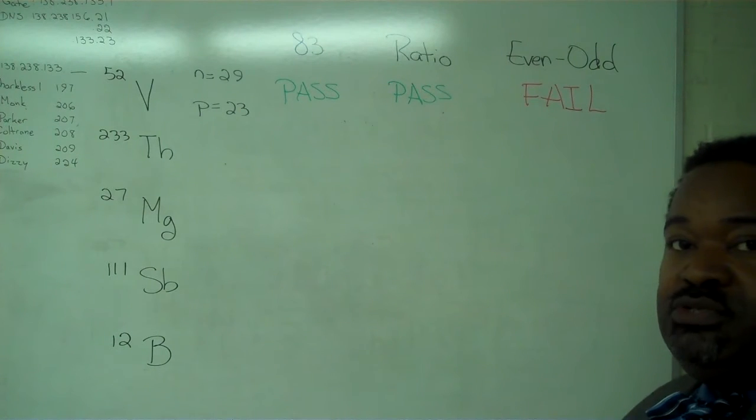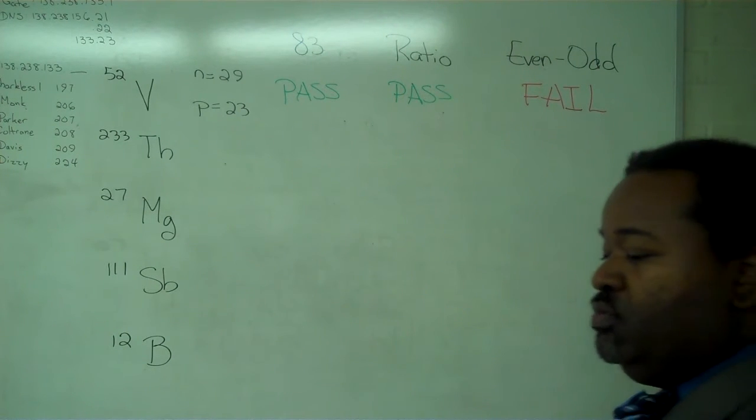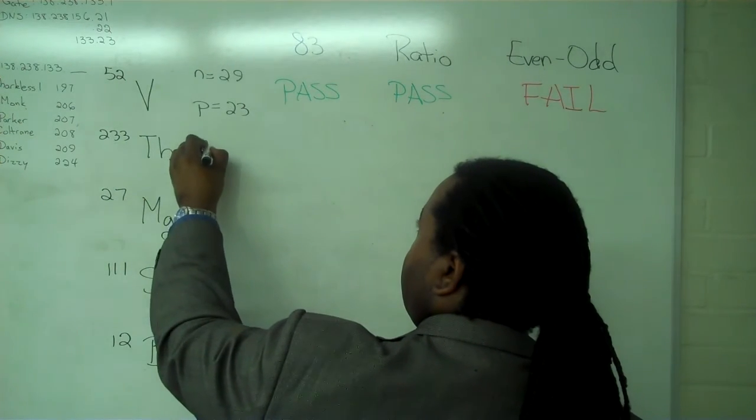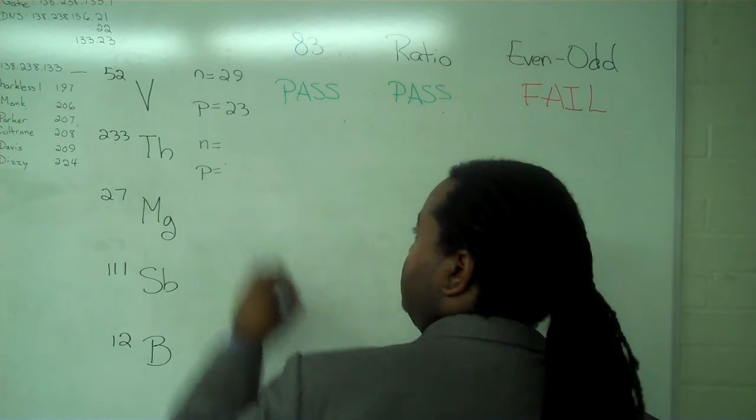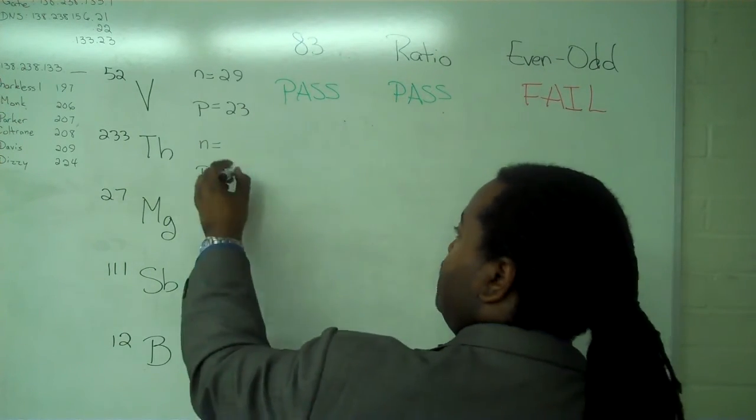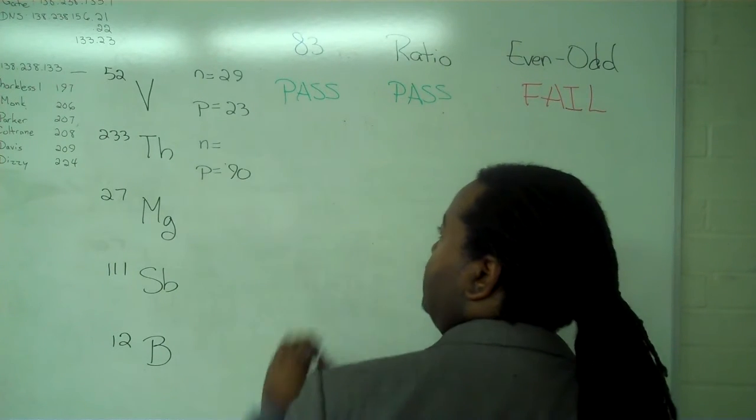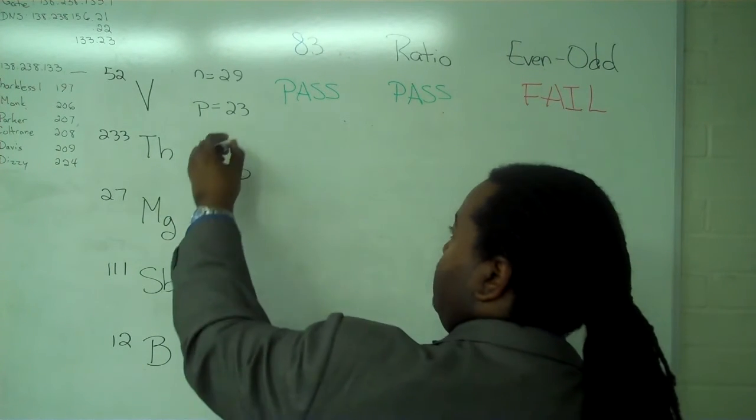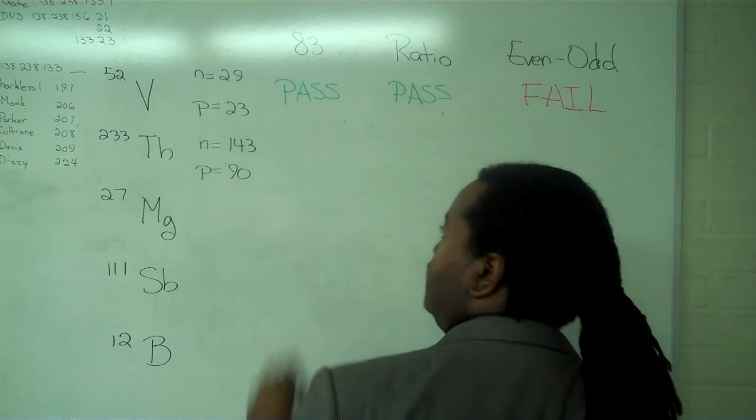And so we'll be able to use these same tests for the remaining nuclei. And I simply have to get the number of neutrons and protons. Thorium is atomic number 90. This means that we have 143 neutrons.